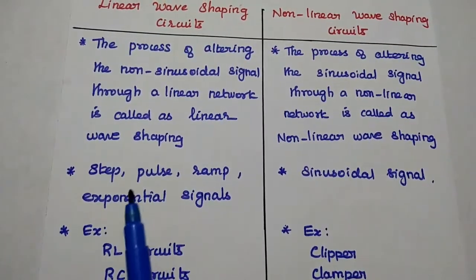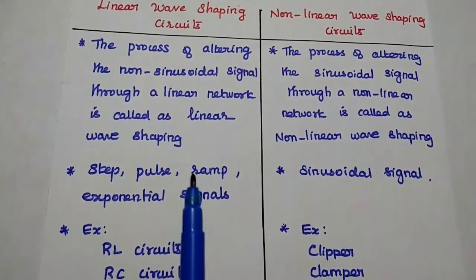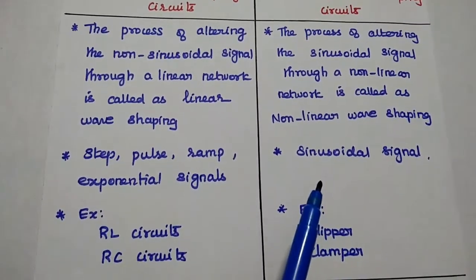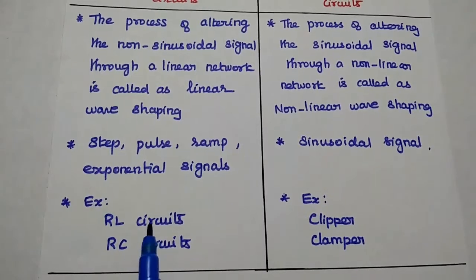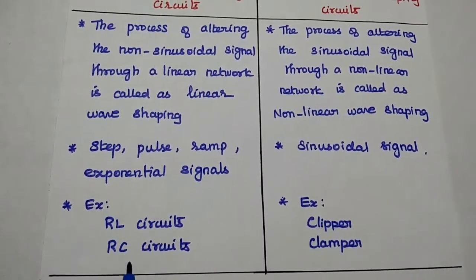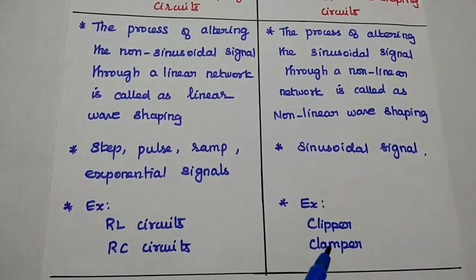The inputs for linear wave shaping can be step signal, pulse signal, ramp signal, or exponential signal. For non-linear we use sinusoidal signal. Examples are RL circuits, RC circuits for linear, and clipper, clamper, etc. for non-linear.